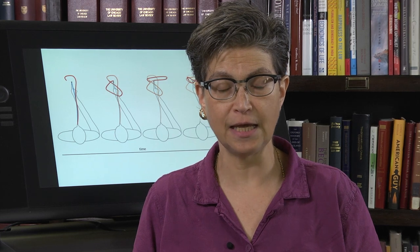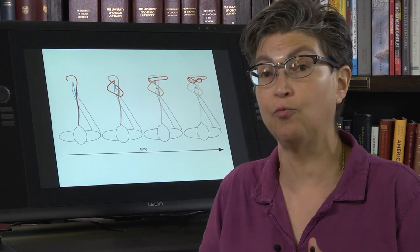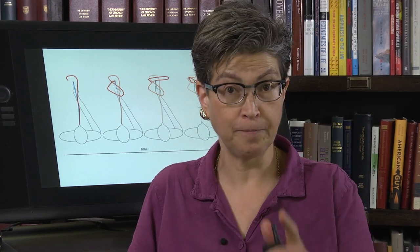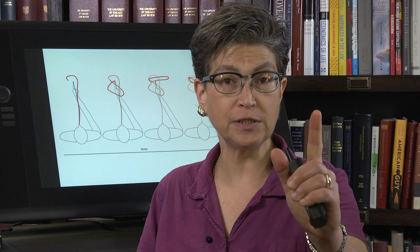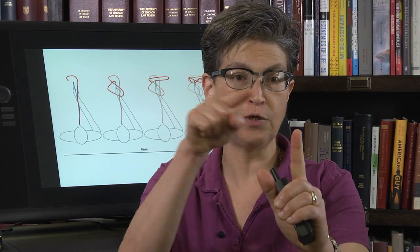Cerebellar damage is going to produce something called ataxia. Ataxia is not paralysis — it's not that you can't move, as you would get with corticospinal tract or corticobulbar tract lesions. Instead, it is a loss of coordination. For example, if I am trying to reach my finger to a target, I have to go and then slow down so that I end on my finger.